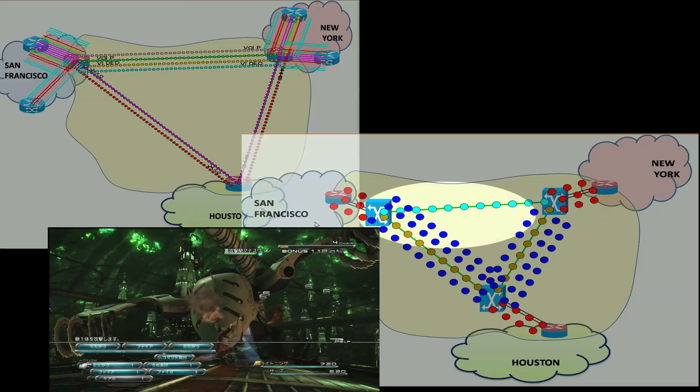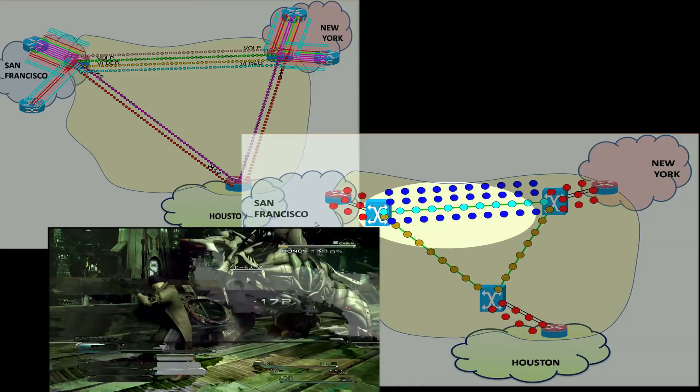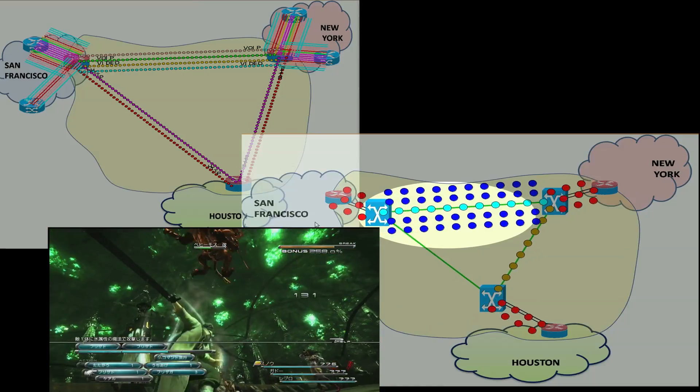Finally, we demonstrate network recovery. When a fiber cut happens between the San Francisco and Houston switches, the controller prioritizes the rerouting of the video circuits over the best effort web traffic circuit.